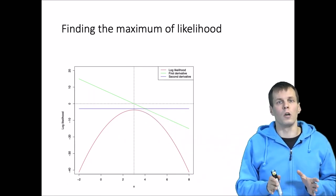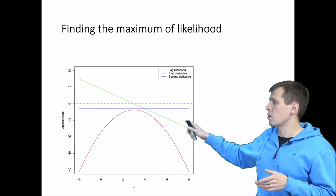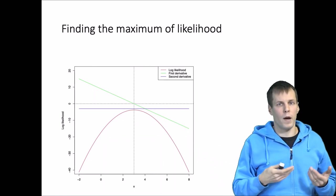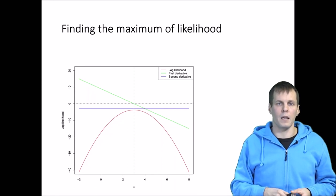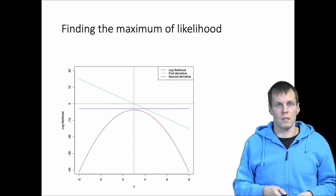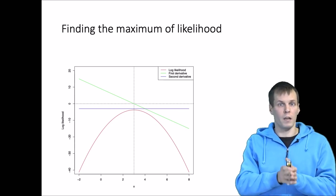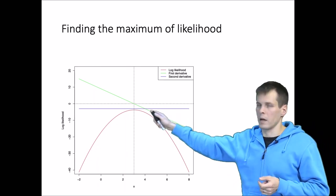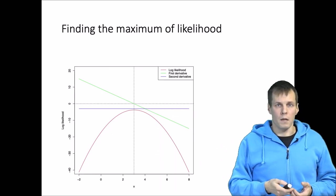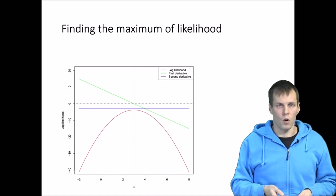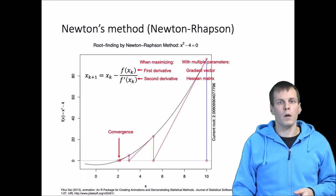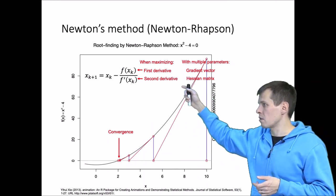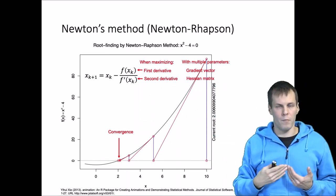In practice, we maximize by looking at where the first derivative is zero. In a multiple-parameter estimation problem — such as estimating mean and standard deviation from the same data — we have two derivatives in the gradient vector and we look for a gradient vector where all elements are zero. We use the second derivative, and when we have multiple parameters, the second derivatives go into the Hessian matrix. We apply Newton's technique using the gradient vector and the Hessian matrix.